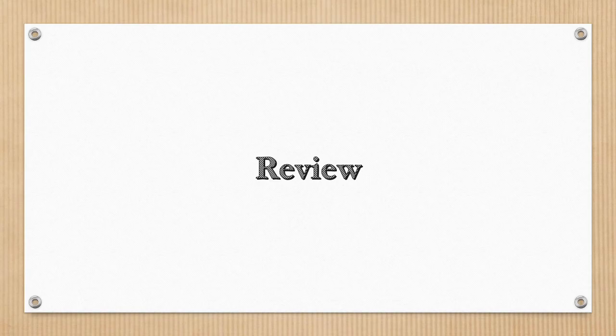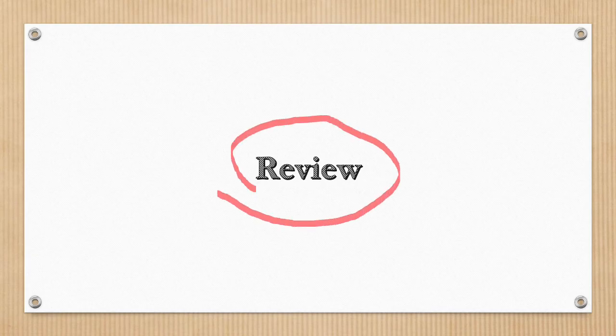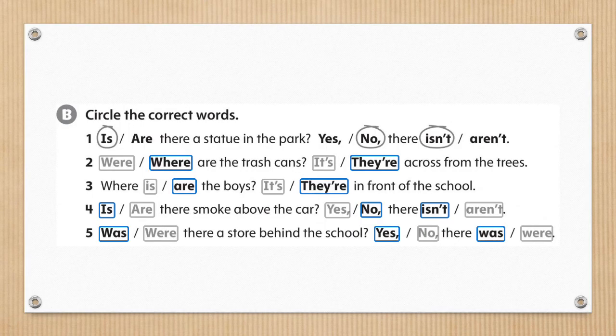We have finished the activities for the grammar section and now we will start with review. The answers for activity B are number 2: where and there. Number 3: are, there, there. Number 4: is, no, isn't. Number 5: was, yes, was.